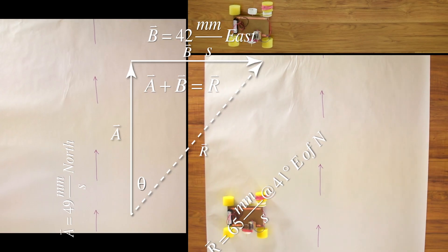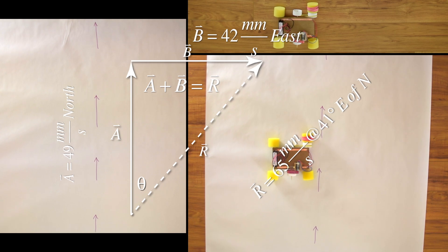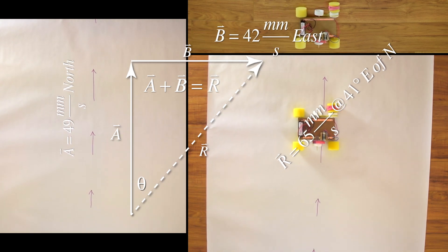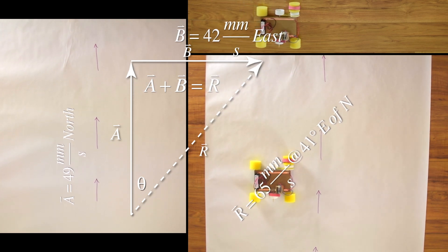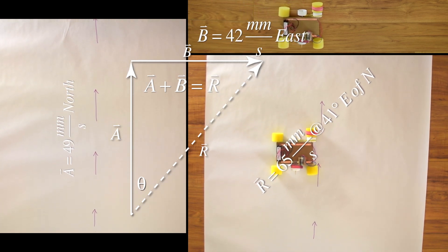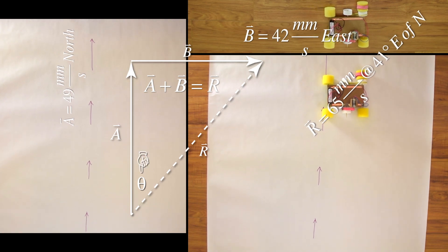In our previous lesson, we did an example where we added two velocity vectors, a and b, together to get the resultant velocity vector, r, of our slow velocity eraser. Our answer was 65 millimeters per second at an angle of 41 degrees east of north. Today, we are going to learn why this angle theta is east of north.